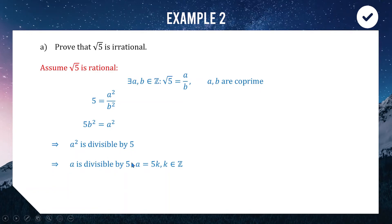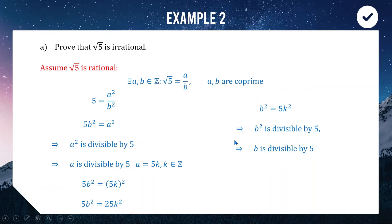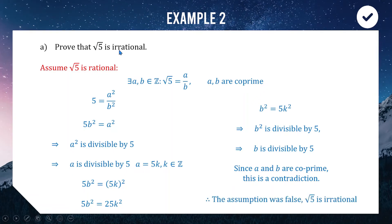You are allowed to assume that in your contradiction proof. So a² divisible by 5 implies a is divisible by 5, so we write a = 5k. Substituting into a² = 5b²: 5b² = (5k)² = 25k², so b² = 5k². This means b² is a multiple of 5, which implies b is also divisible by 5. This contradicts our declaration that a and b are co-prime. Therefore, our assumption was false and √5 is irrational.